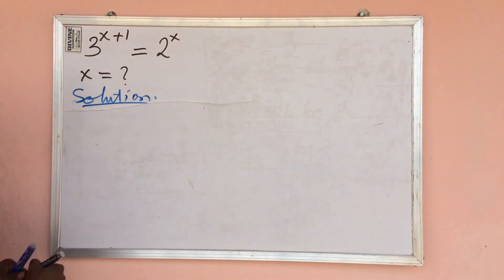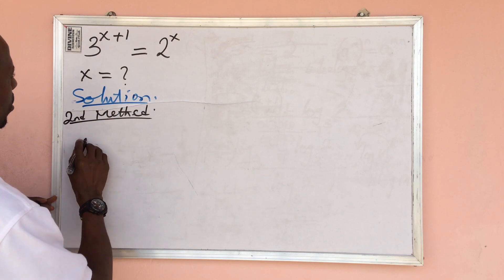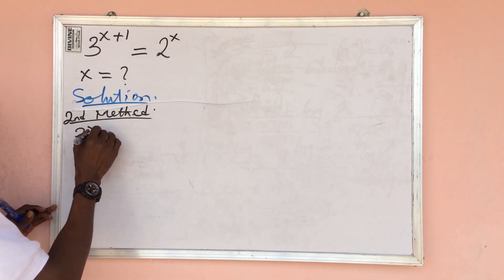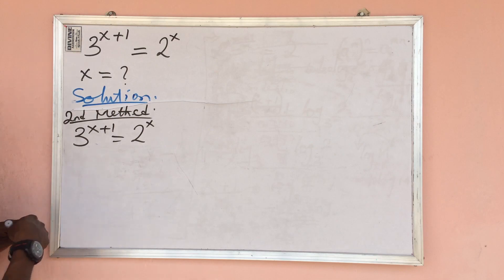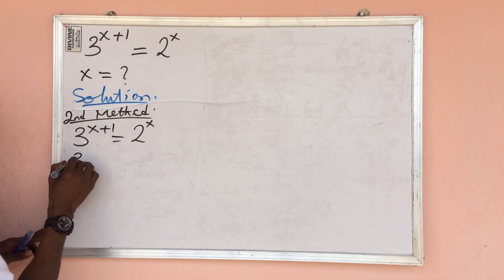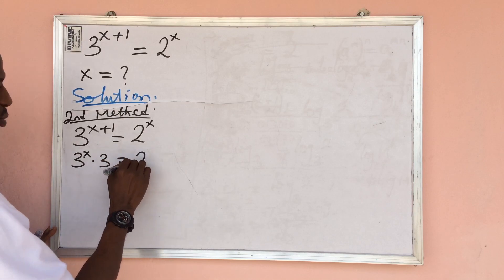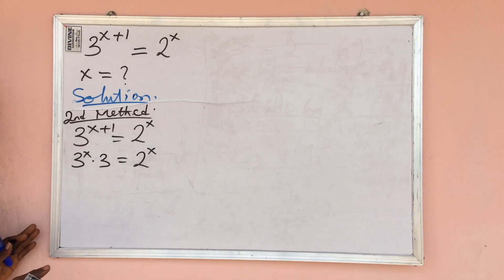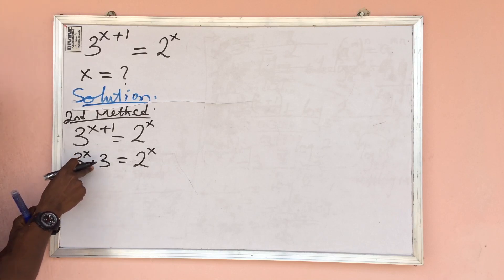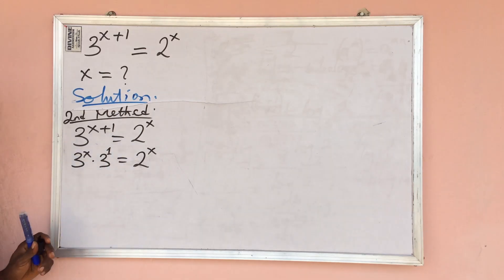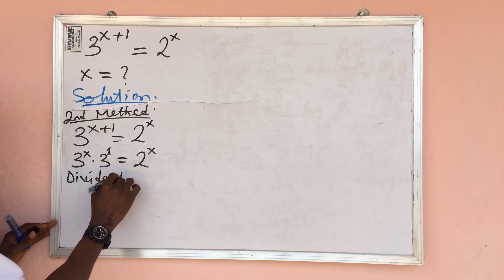Now let's take a look at the second method. We put down our question: three to the power of one plus x equals two to the power of x. The expression three to the power of x plus one can also be written as three to the power of x, times three to the power of one, equal to two to the power of x. This applies the law of indices — when bases are the same with a multiplication sign, we add the powers.